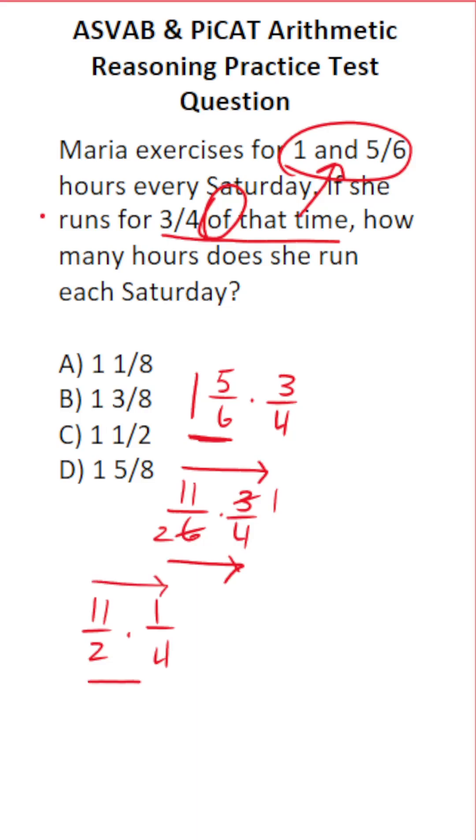Now we're going to multiply straight across, given that we reduced it. 11 times 1 is 11. 2 times 4 is 8. This isn't an answer choice because it's an improper fraction. We're going to convert this improper fraction back to a mixed number via long division.